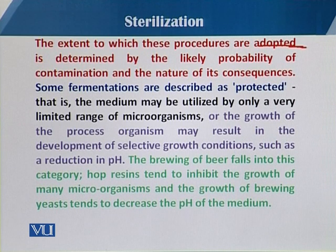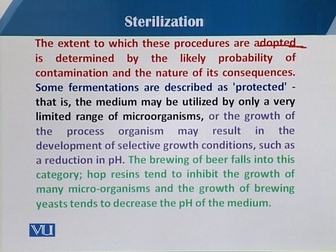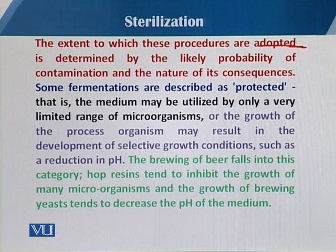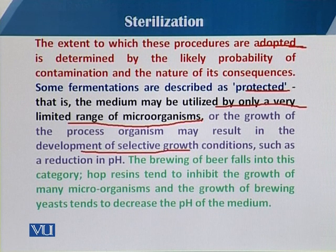If we have a well-controlled contamination avoidance mechanism, there will be a lower probability of contamination. Based on contamination risk, fermentations can be divided into two categories: protected or unprotected. In most fermentations, they are termed protected — where the medium may be utilized only by a limited range of microorganisms, called the process organism, through the development of selective growth conditions.